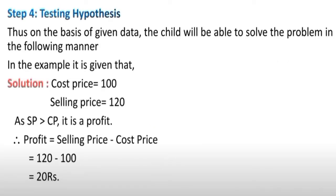Step 4 is testing the hypothesis. On the given data, the child will solve the problem as follows. The given values are: cost price = 100 and selling price = 120. Since the selling price is more than the cost price, it is a profit. The formula is: profit = selling price − cost price = 120 − 100 = rupees 20. So the profit is rupees 20.